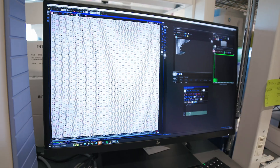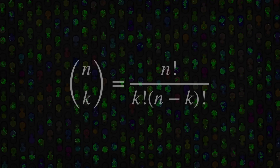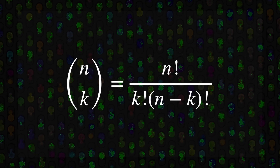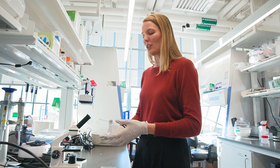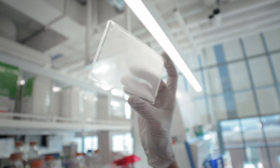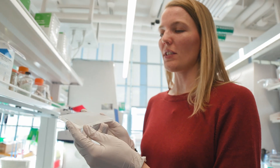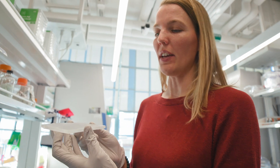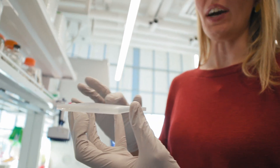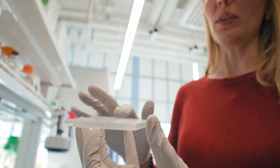So when you have a library of n things, and you want to make all possible k-size combinations, how do you do that? This is a K-CHIP. On the surface of it is an array of 100,000 microwells.